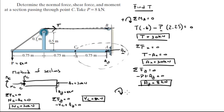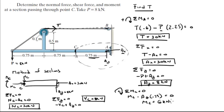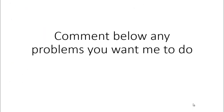Assuming clockwise is positive, the sum of the moments at C equals 0. So MC minus the moment created by Ay — which is Ay times 0.75 because from C to A is 0.75 meters — equals 0. Ax creates no moment because it points directly at C. So the moment equals Ay times 0.75, which comes out to be 6 kN·m clockwise. Those are the final answers for the normal, shear, and moment at C. Please comment below if you want me to do any problems and I'll be happy to help.